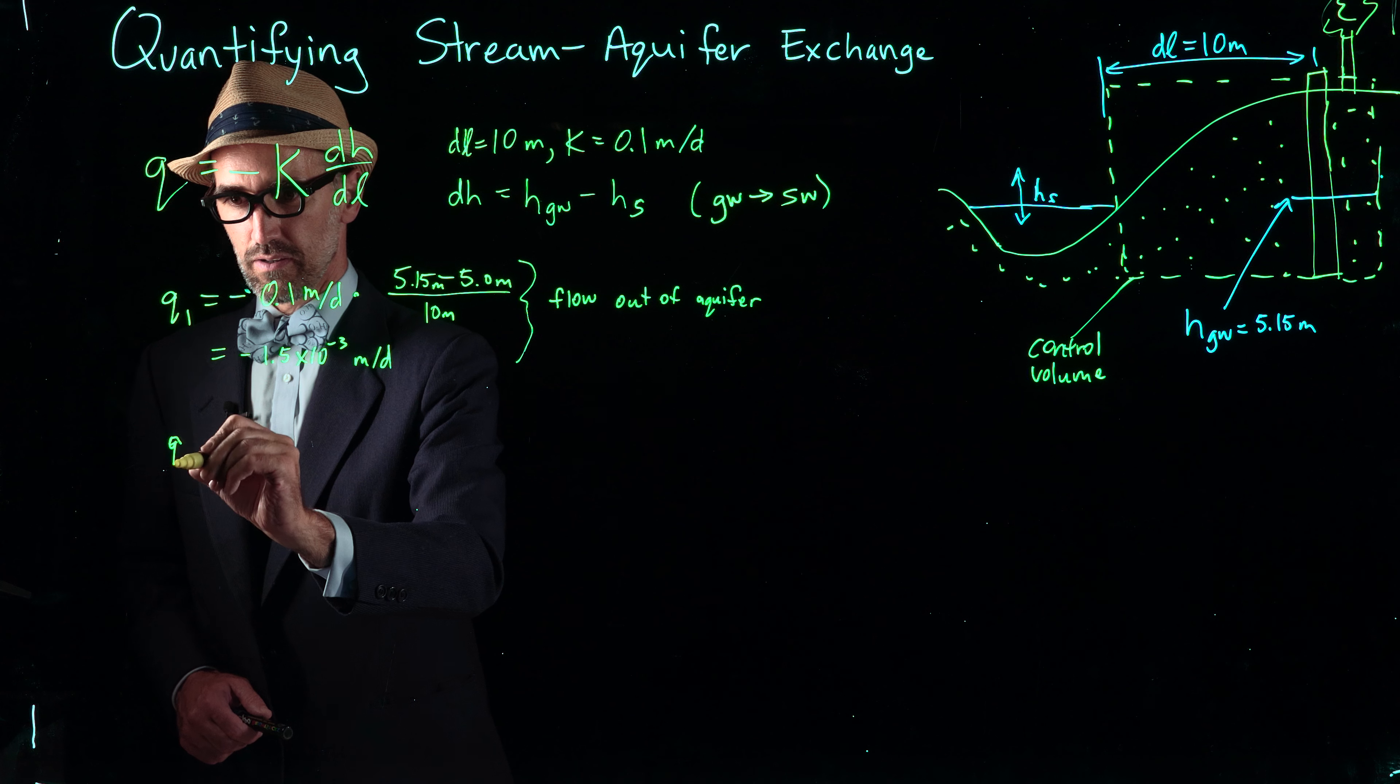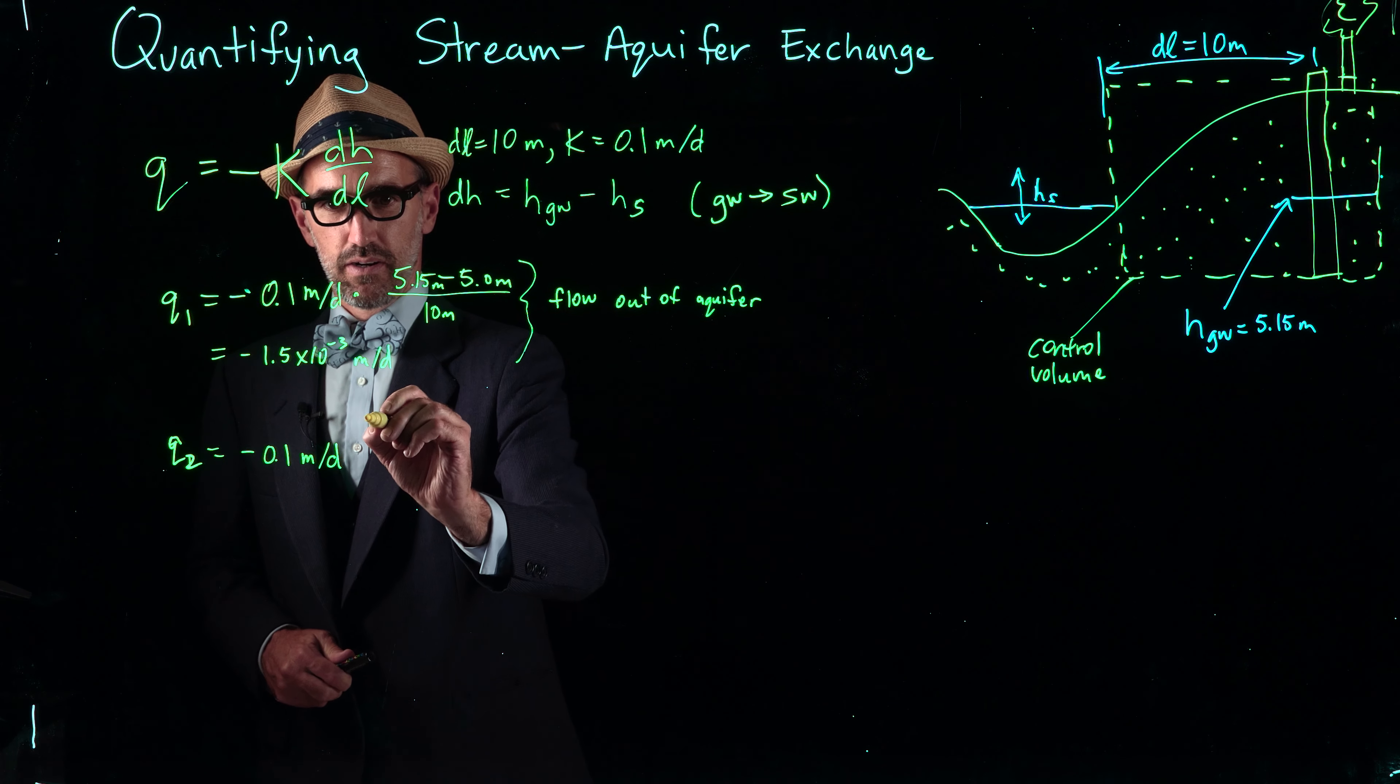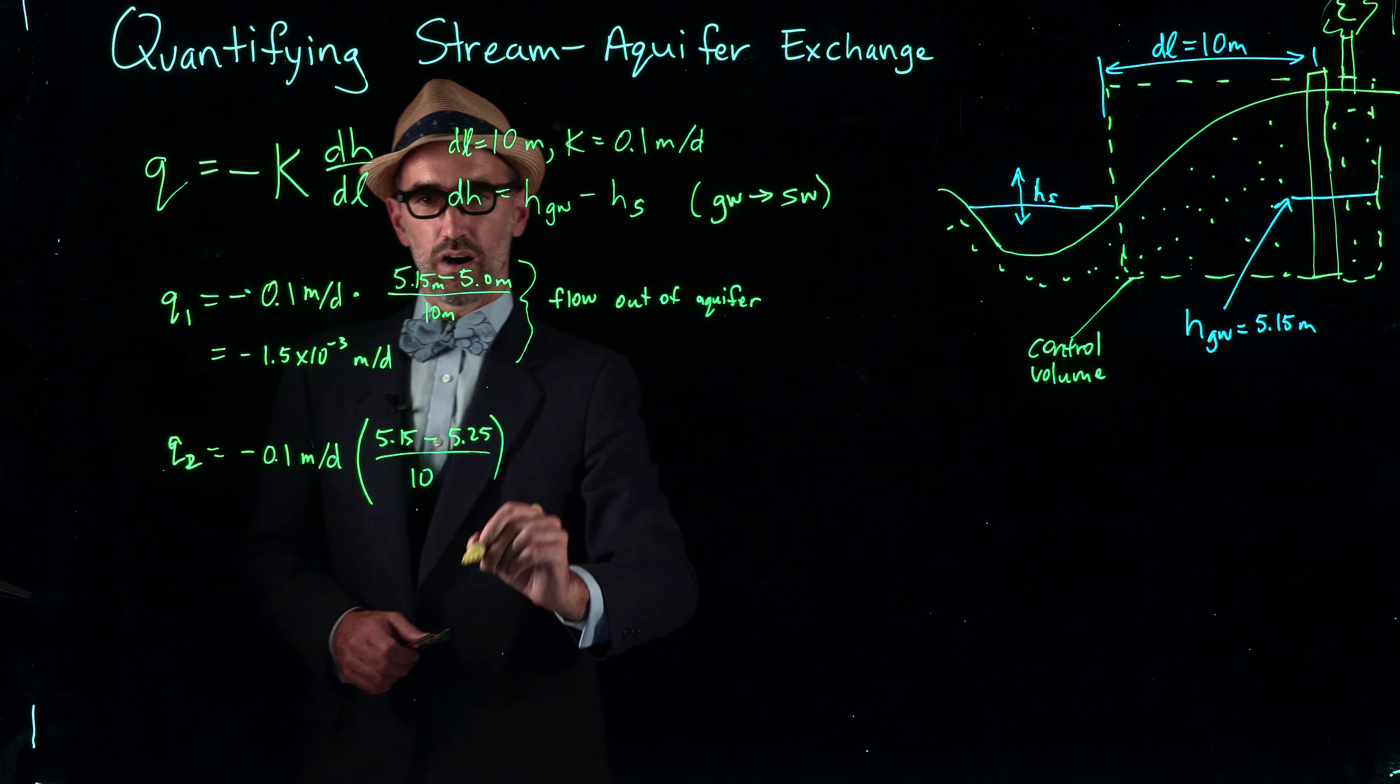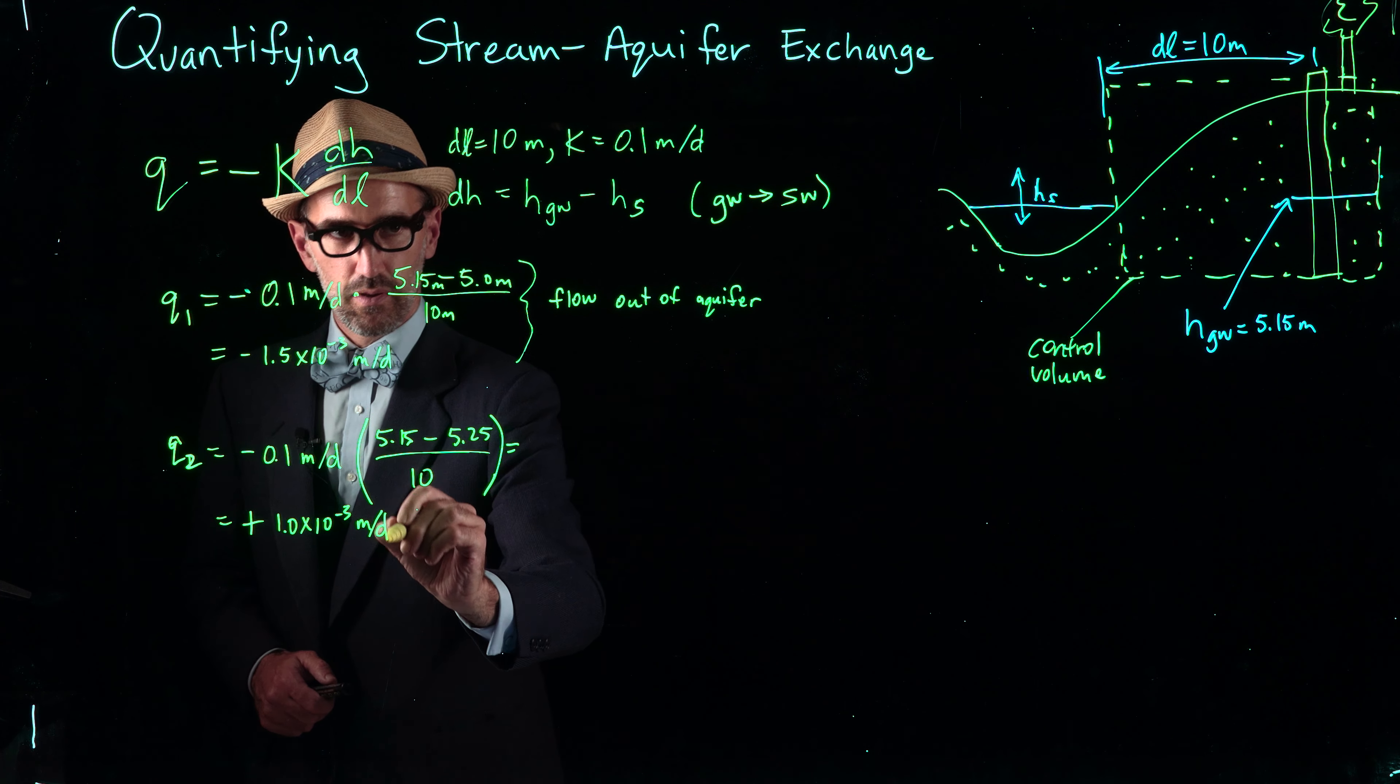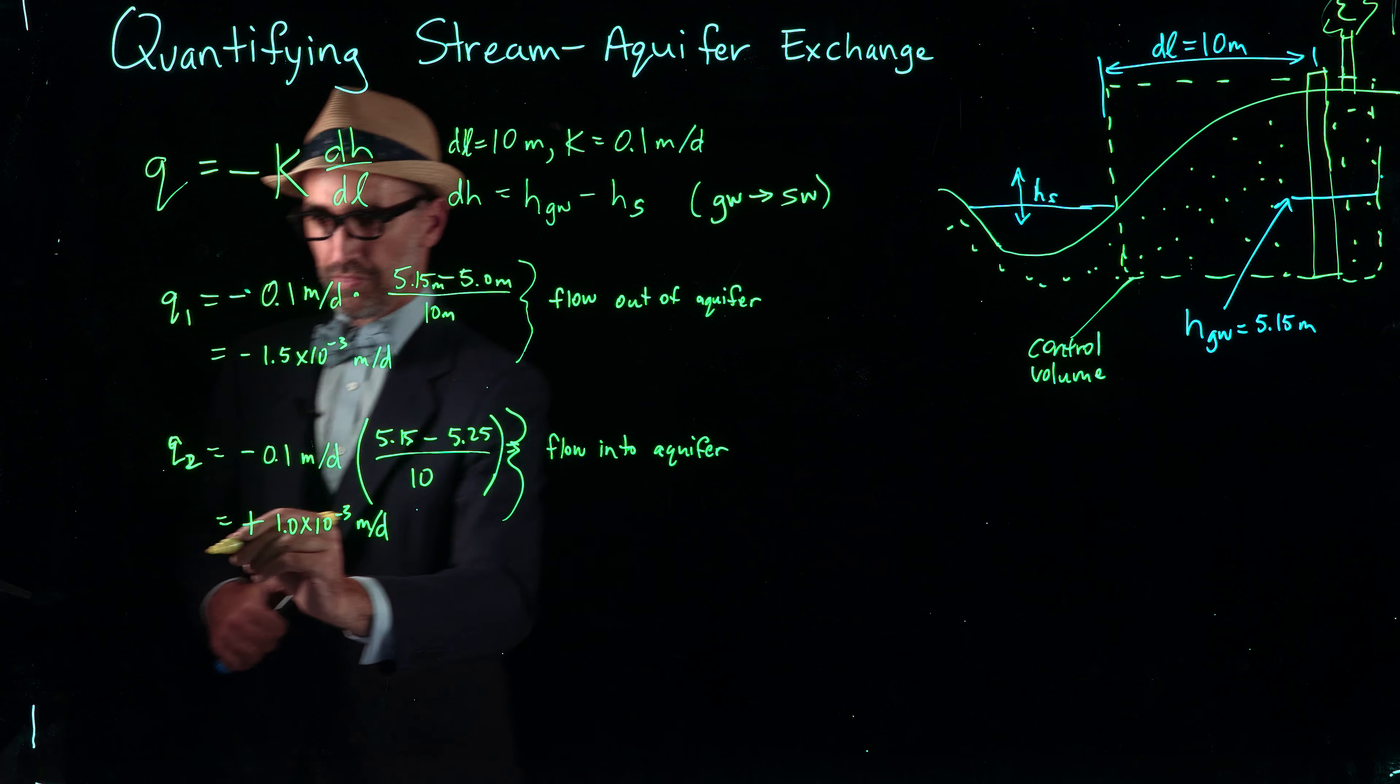Now at peak stream flow, q2, we have a much higher h of s. We have the same hydraulic conductivity, so negative 0.1 meters per day, and our hydraulic gradient is 5.15 minus 5.25, so our stream level is higher now than our groundwater level. This equals positive 1.0 times 10 to the negative 3 meters per day. This positive result implies there's flow into the aquifer. The water has risen high enough in the stream that it actually flows now into the aquifer.